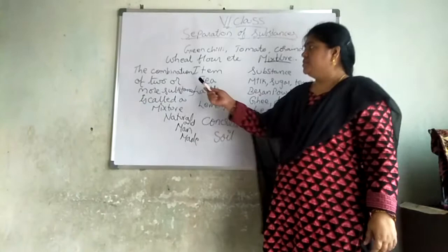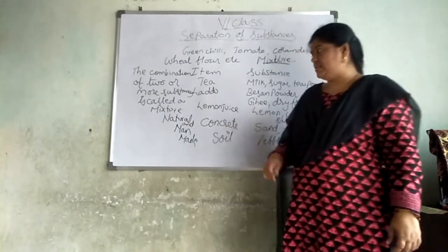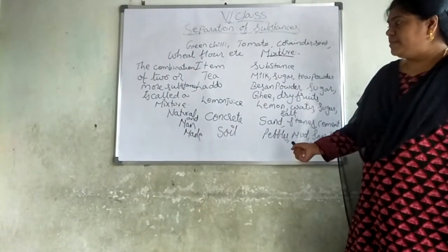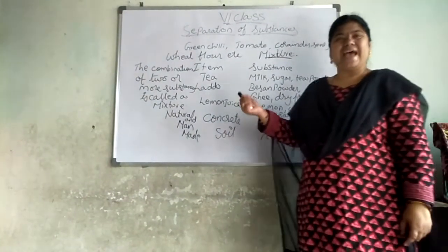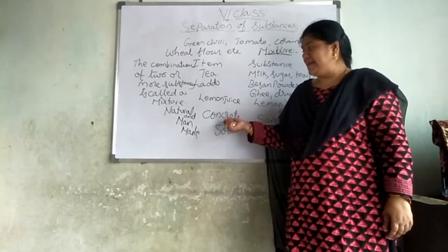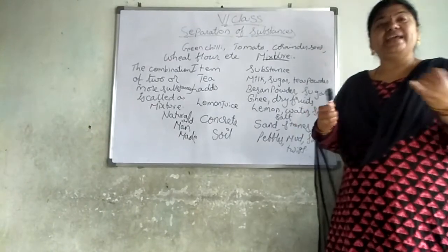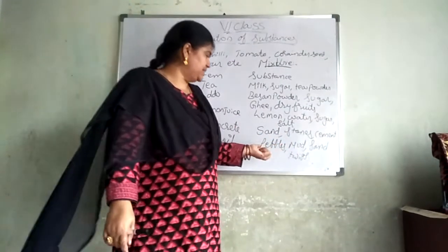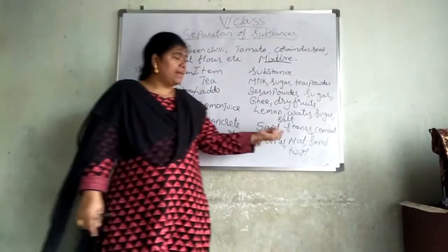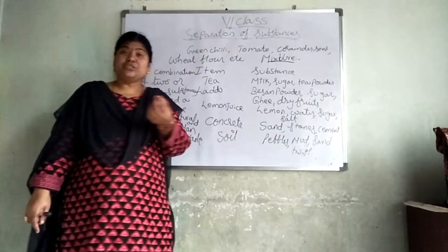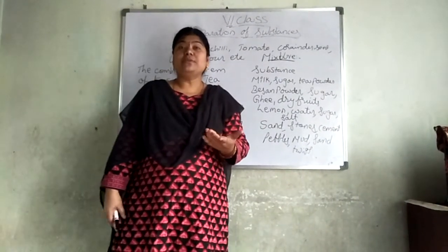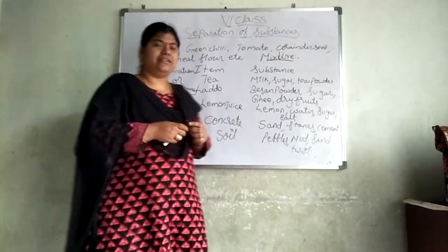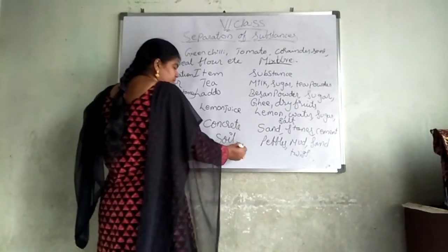The combination of two or more substances is called a mixture. Some are natural and some are manmade. Coming to natural substances, we can take soil as an example. Soil is from nature itself — we didn't prepare anything. In soil, we can see pebbles, mud, sand particles, twigs, ants, worms, and larvae. So soil comes under natural substances.